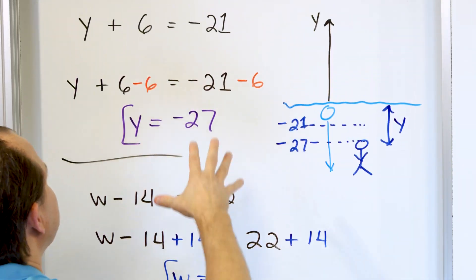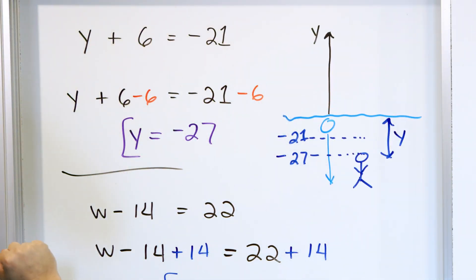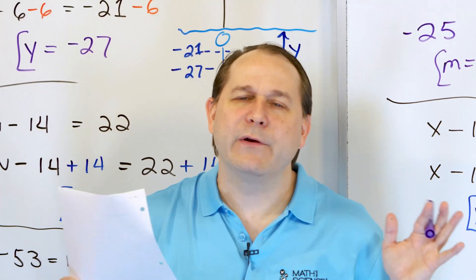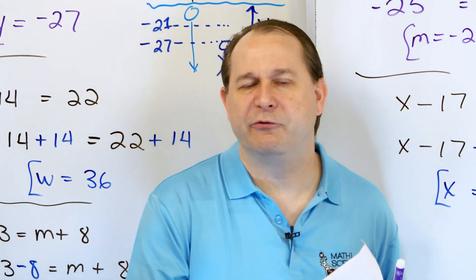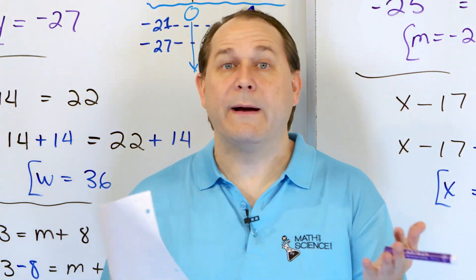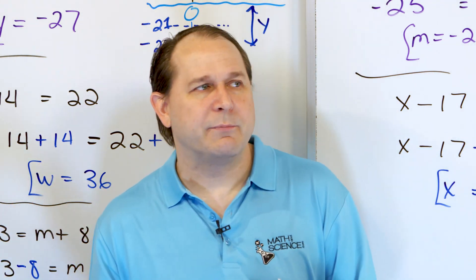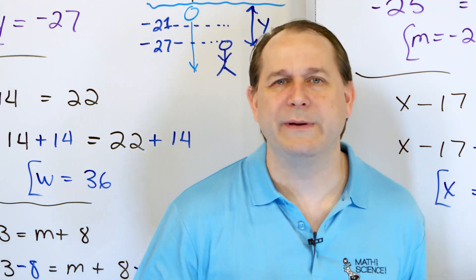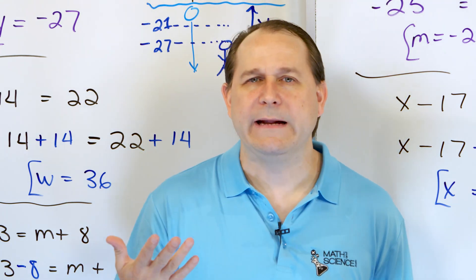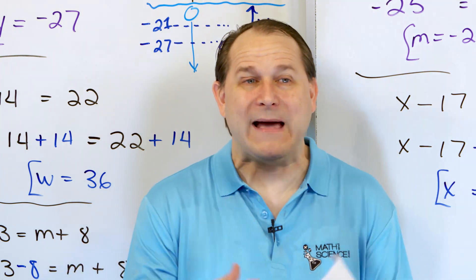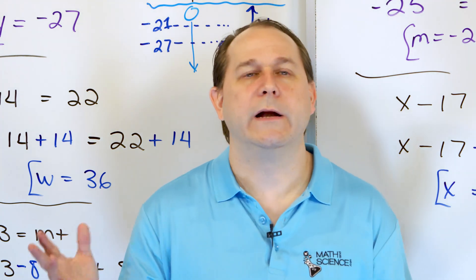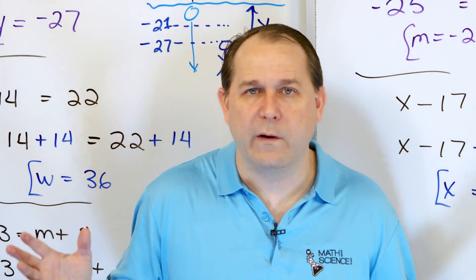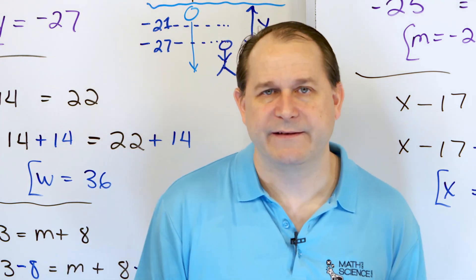In the first problem, we started by presenting the equation and giving a practical situation for what it means. Every one of these equations could represent something — we could talk about money, temperature, or even speed or velocity. Start at some negative temperature and go down this much — what temperature will you be at? We could talk about velocity, speed, magnetic fields, or gravity. The point is, all of these equations mean something or can mean something.